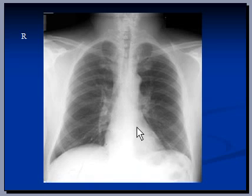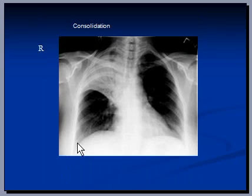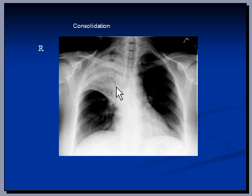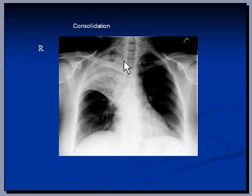Mediastinum is normal in size and shape; cardiac size is normal. Another X-ray shows consolidation in the right superior lobe. You can see air bronchogram, which means that the bronchial branches are filled with air and because the background is opaque you can see these branches clearly. This is the horizontal fissure, so the consolidation is limited to one lobe — this is a very good example of lobar pneumonia.